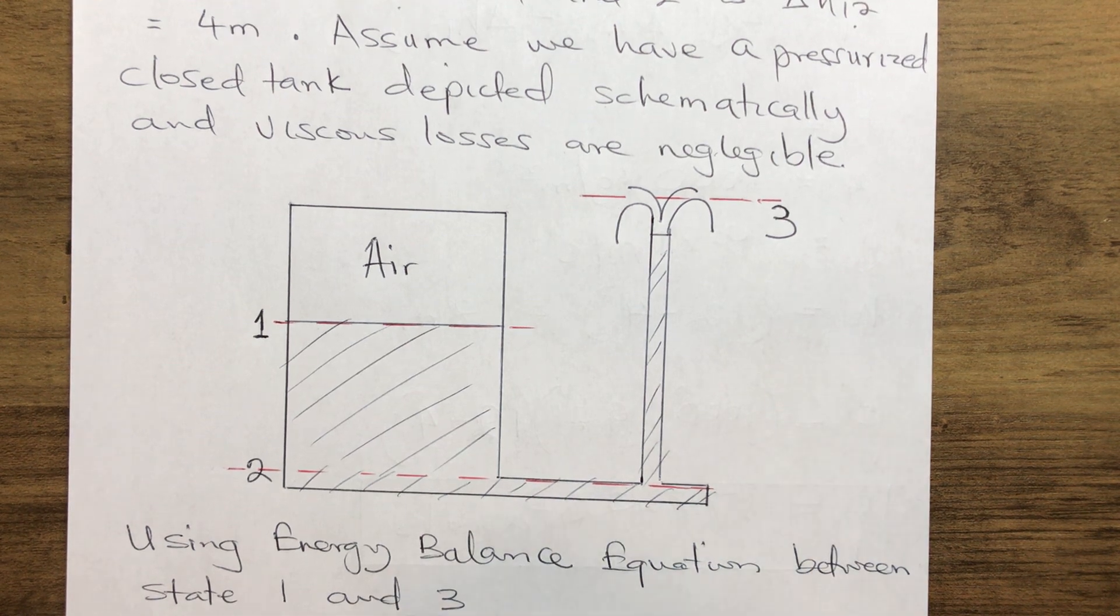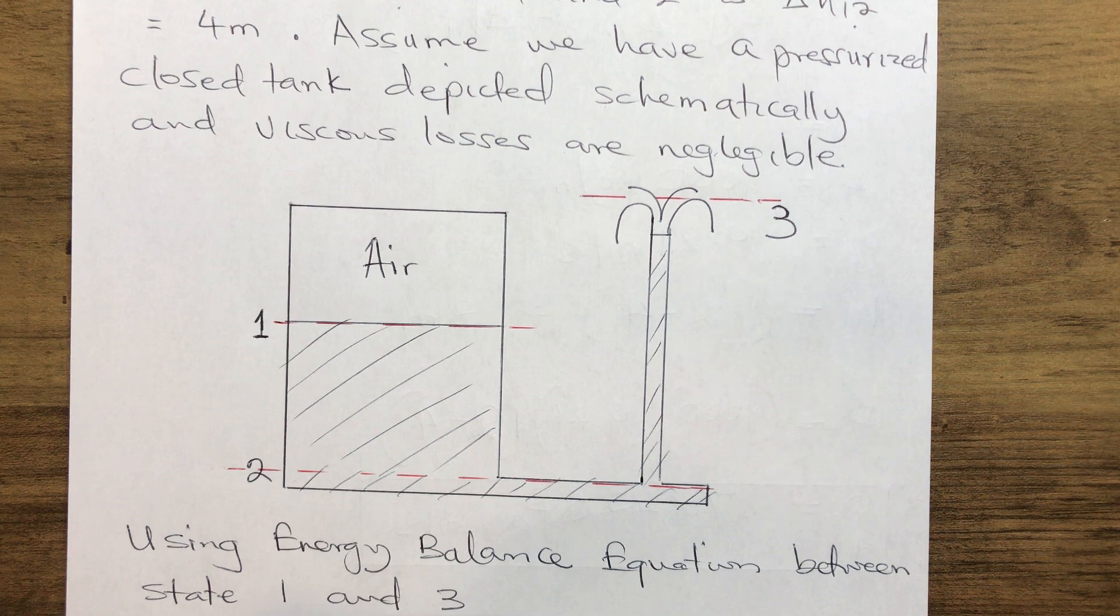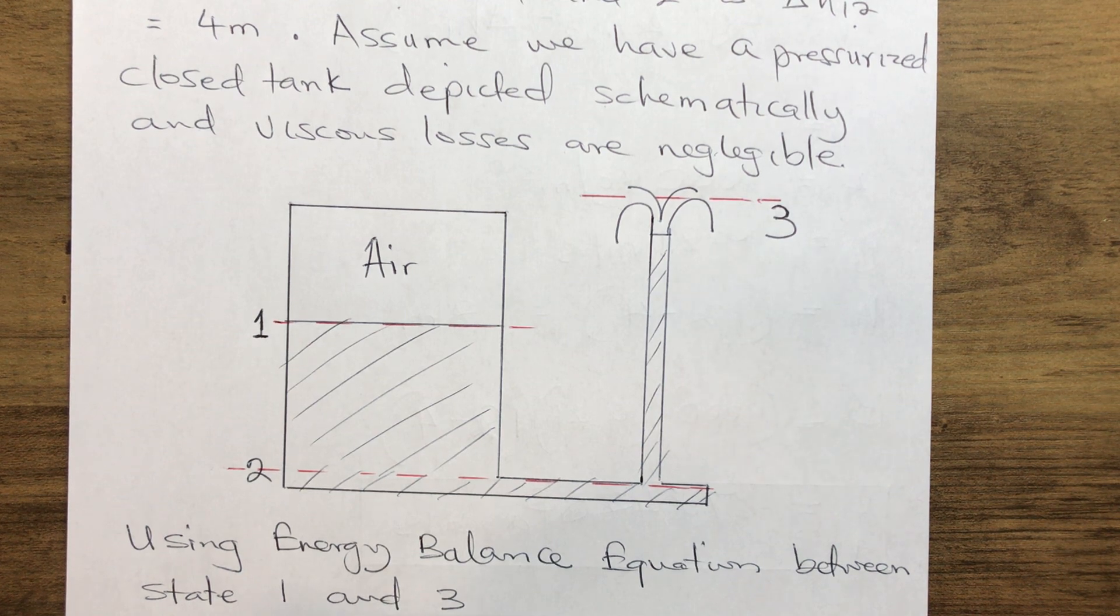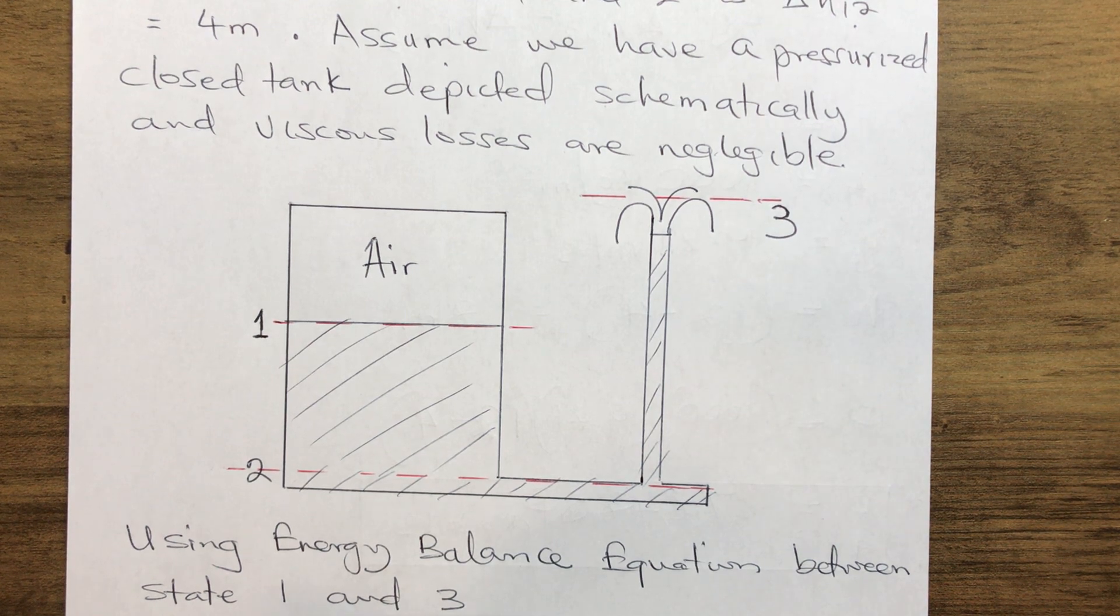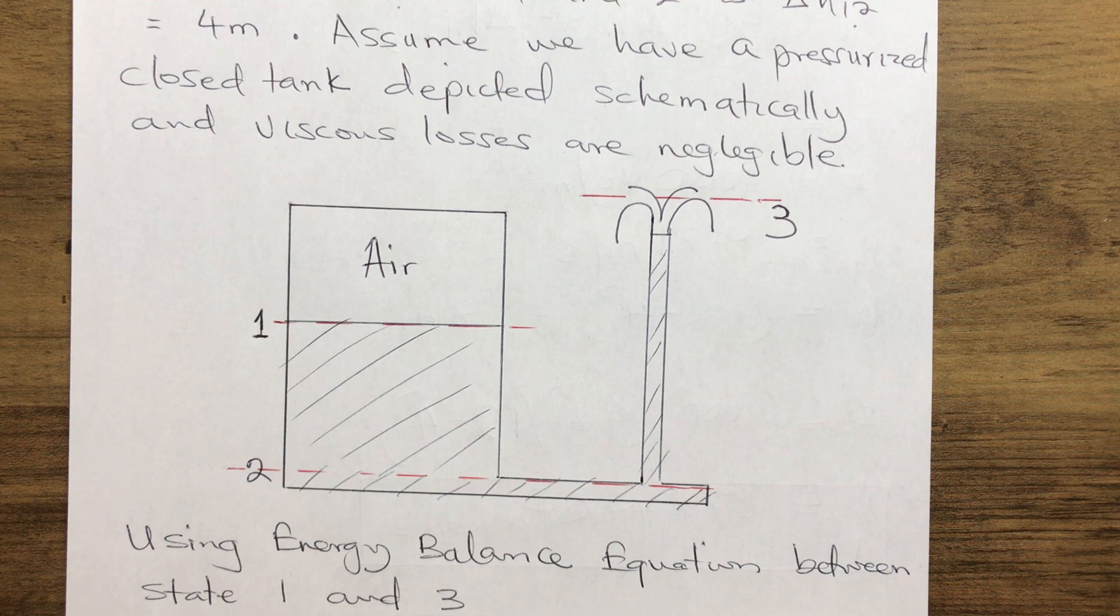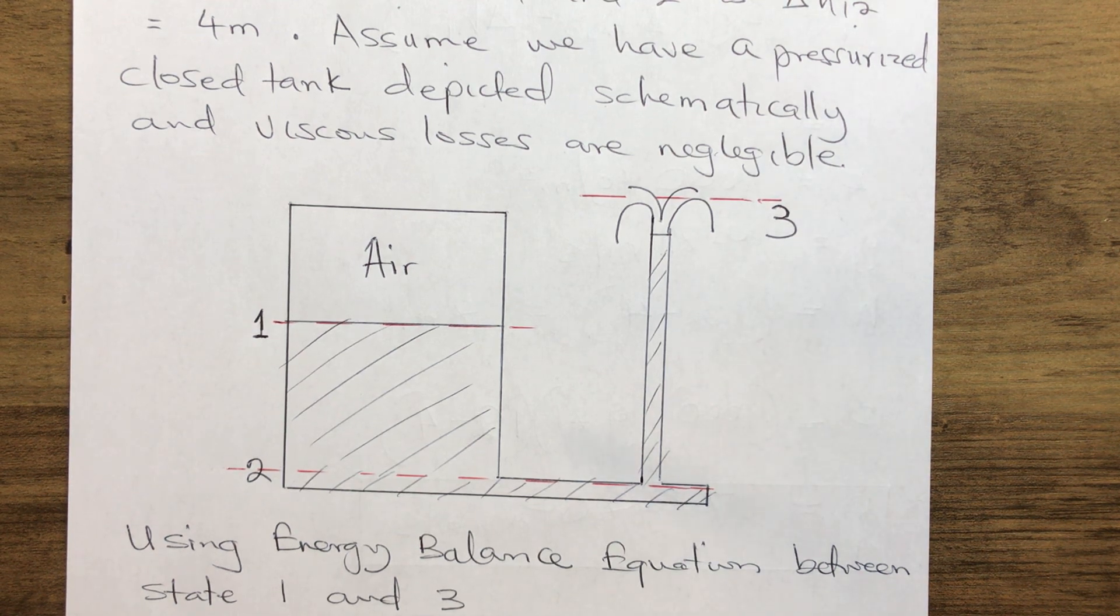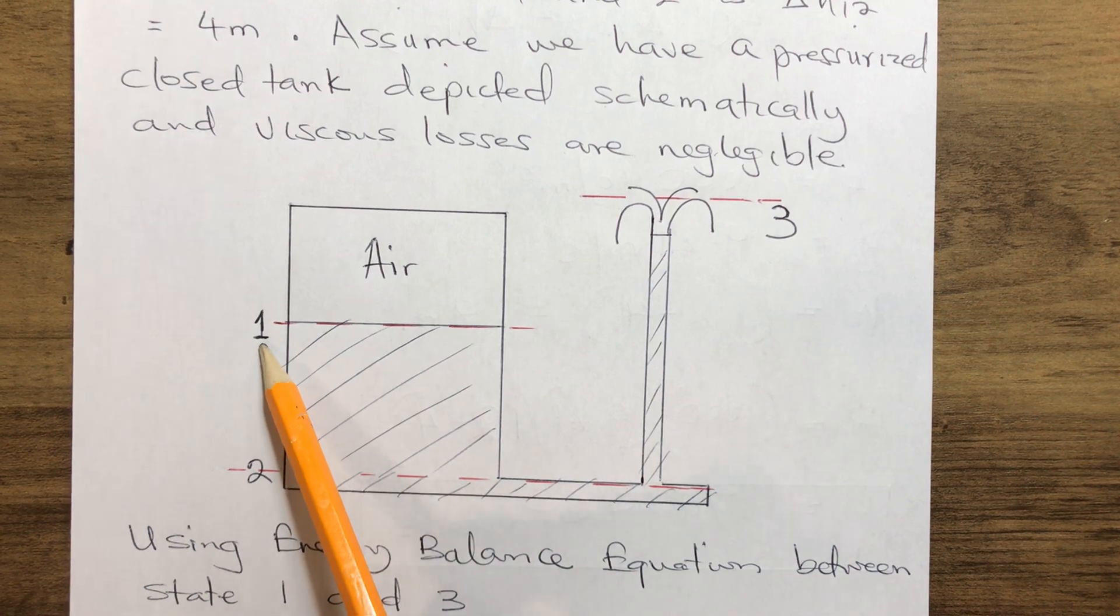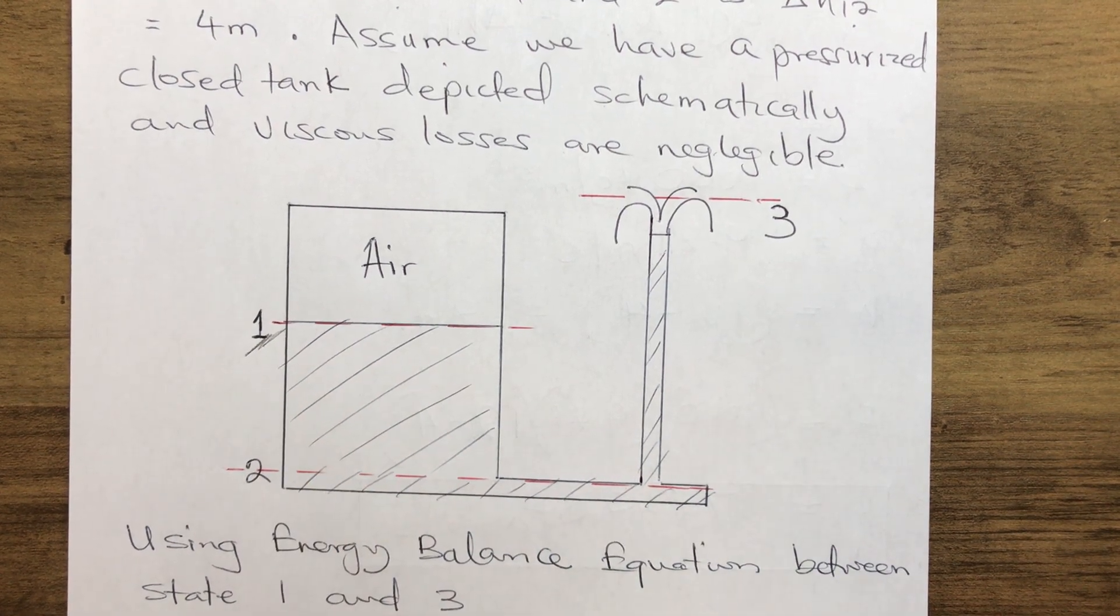Today we have a pressurized tank filled with water producing a jet on the right high side due to its pressure internally. Now we have to calculate the pressure one, that is the pressure at station one here. So how do we go about that?